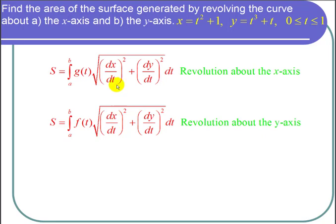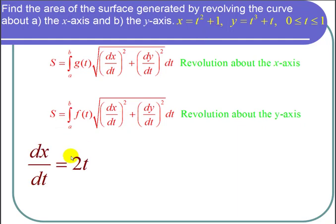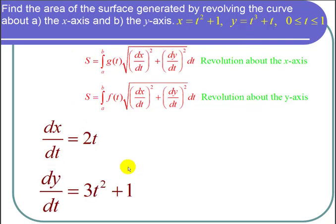For both formulas I need to find dx/dt and dy/dt. So dx/dt is the derivative of t squared plus 1, which is just 2t. And dy/dt is the derivative of t cubed plus t, which is 3t squared plus 1.